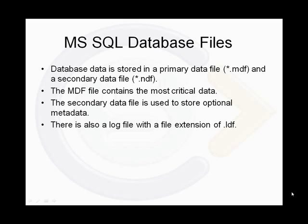There are three types of files associated with MS SQL databases. The database data is stored in a primary data file with the extension .mdf and the secondary data file .ndf. The MDF is the critical file that contains both the system databases and user database data. The secondary data file is used to store optional metadata. There is also a log file with a file extension of .ldf, but loss of this file does not affect the readability or integrity of the database data file.